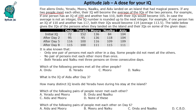For example, people with IQ 100 and 110 meet — both their IQs would become 105. In case the average is not an integer, it is rounded up to the next integer.